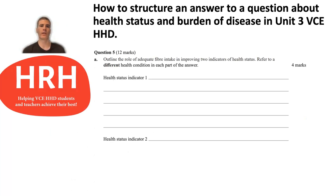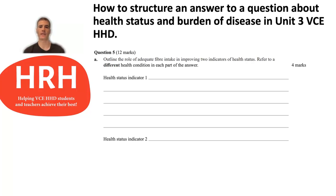So we're looking here at structuring an answer to a question about health status and burden of disease, and I thought the best way of talking about this was to look at a question from the 2023 exam. This one is asking you to outline the role of adequate fiber intake in improving two indicators of health status, referring to a different health condition in each part of your answer, and it was worth four marks.